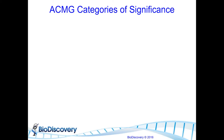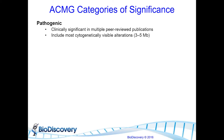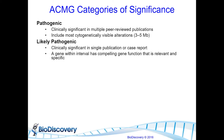Once we've established a region, we want to know how to qualify it. Pathogenic means it's been identified in multiple peer-reviewed publications as clinically significant, and will include most cytogenetically visible alterations of 3 to 5 megabases — though size is somewhat subjective with lab-based distinctions. Likely pathogenic means clinically significant in one publication or case report but not multiple, or there is a gene within the interval with a compelling relevant function that may be less well-known.